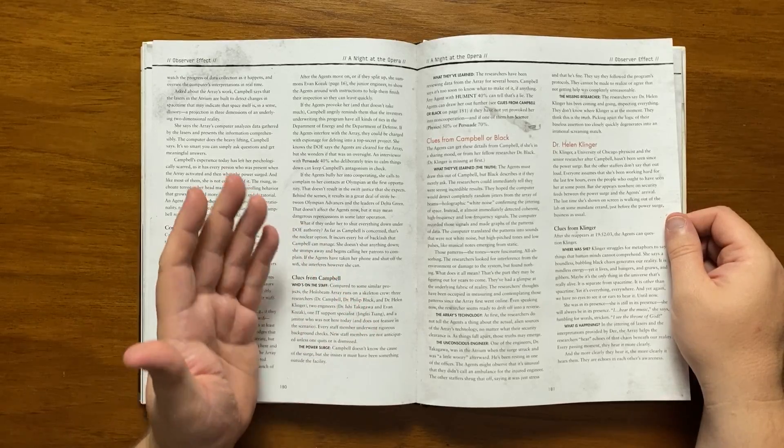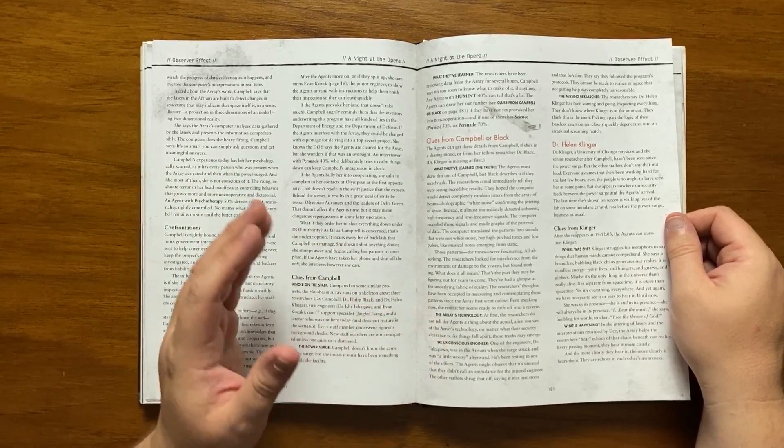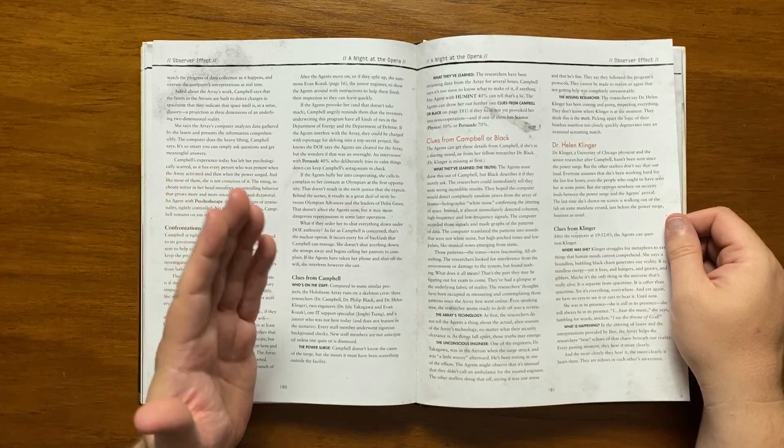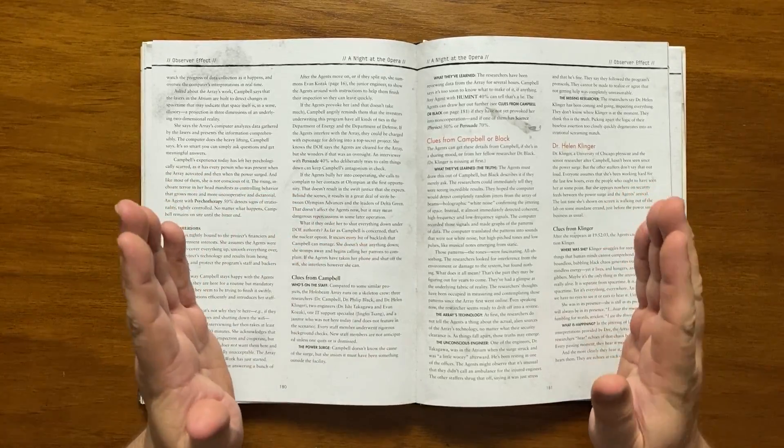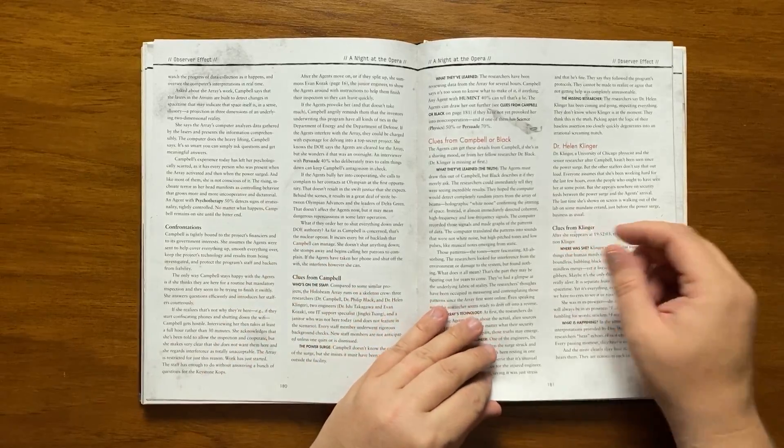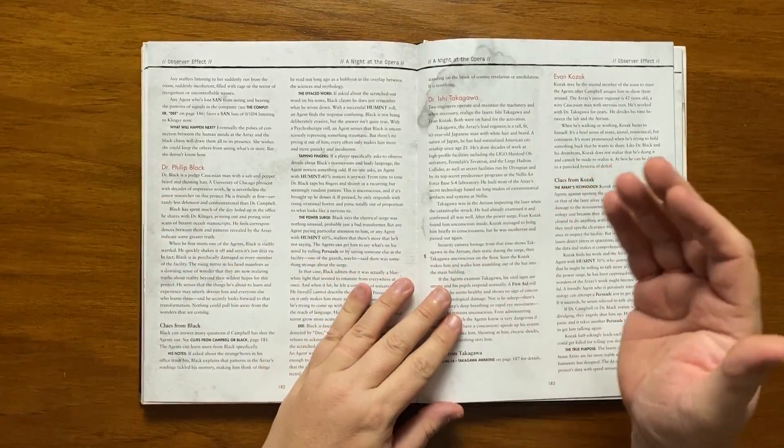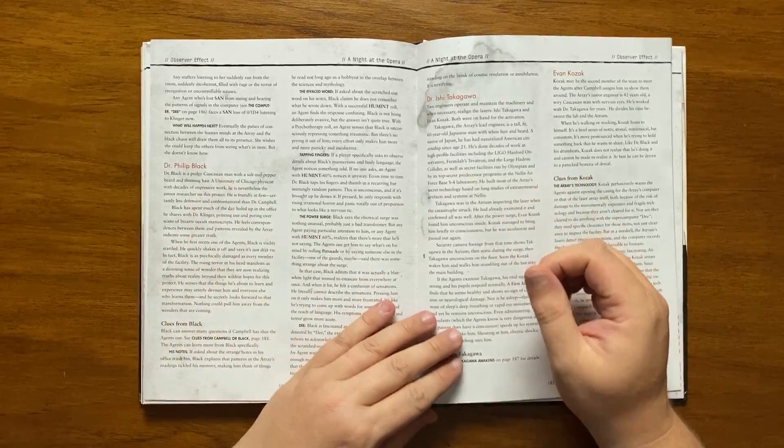What is actually happening is that the supercomputer D is helping the array hear echoes of that chaos beneath our reality and the more clearly we hear it the more clearly it hears us. Hence the observer effect. If any staff members hear her describing this they will run from the room filled with anger and horror becoming incoherent and nauseous. It then moves on to Dr Philip Black.